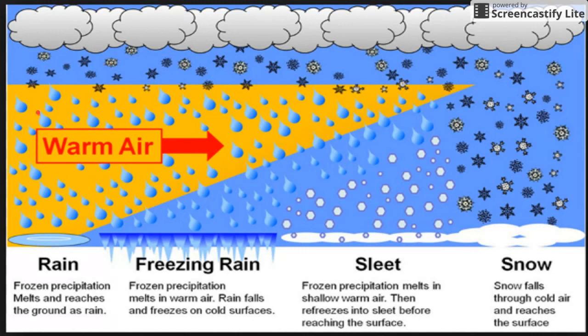So if there's warm air, like during the summer, all throughout, then it just drops as rain. If there is a pretty deep warm layer in the atmosphere...